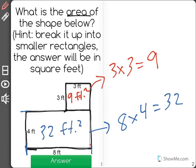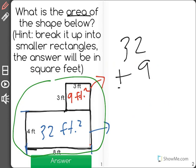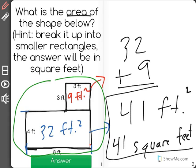Now to find the area of the entire shape, all I have to do is add 32 plus 9. And when I add 32 plus 9, I find out that I get a total of 41 feet squared. Also you could write that as 41 square feet for the correct answer.